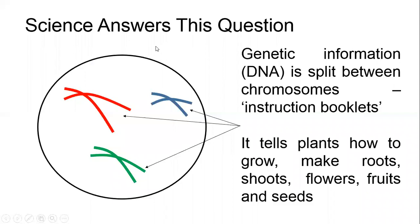Before I tell you about that, I need to tell you about DNA — the genetic information that is found inside every cell. Here I schematically show a cell with a nucleus, where genetic information and DNA is packed into chromosomes, which I show in green, red and blue. So this cell has six chromosomes: two green, two red and two blue.